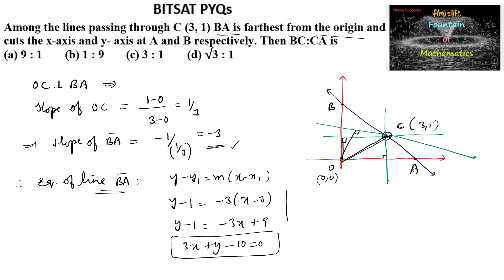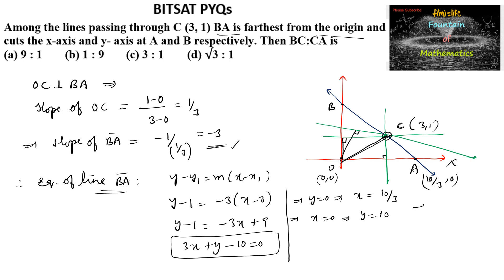Now we find the intercepts. When y = 0, we get x = 10/3, giving point A(10/3, 0). When x = 0, we get y = 10, giving point B(0, 10).